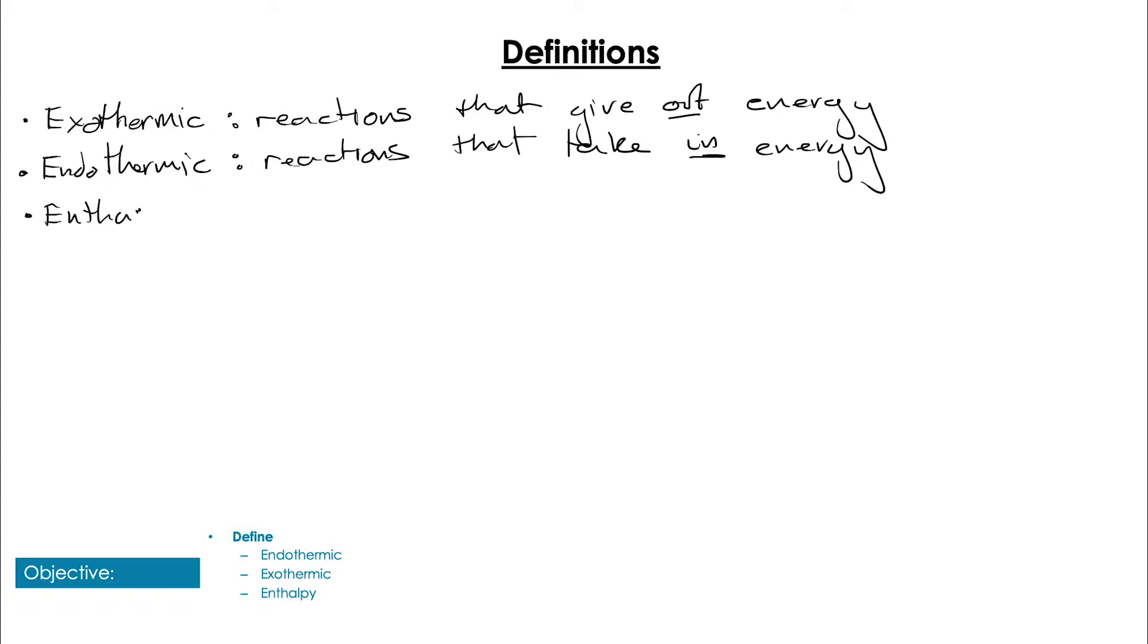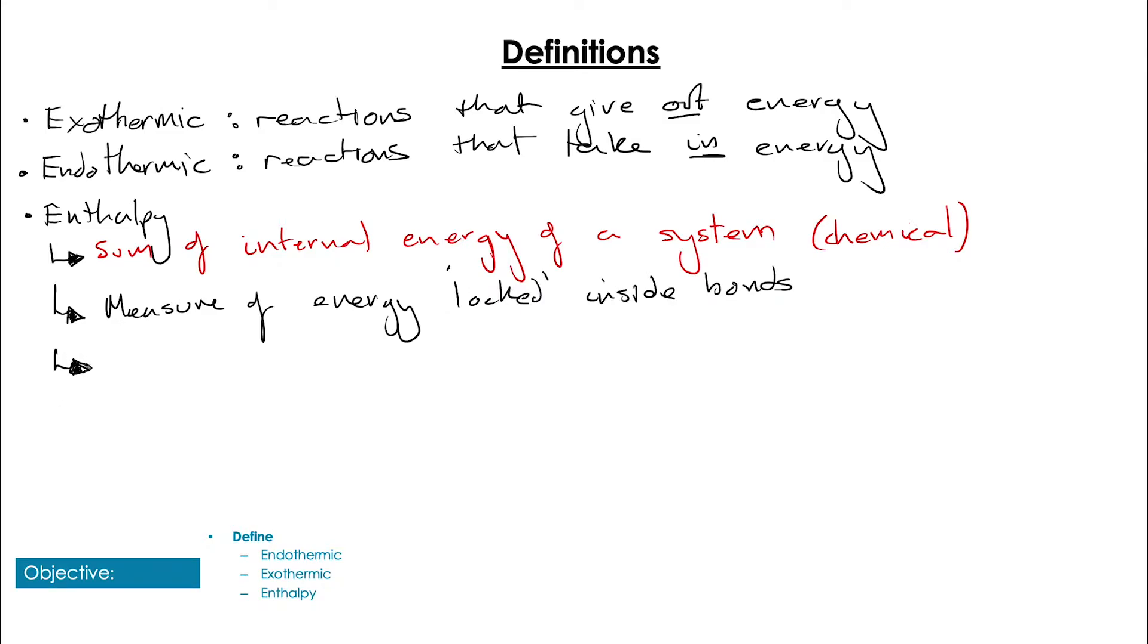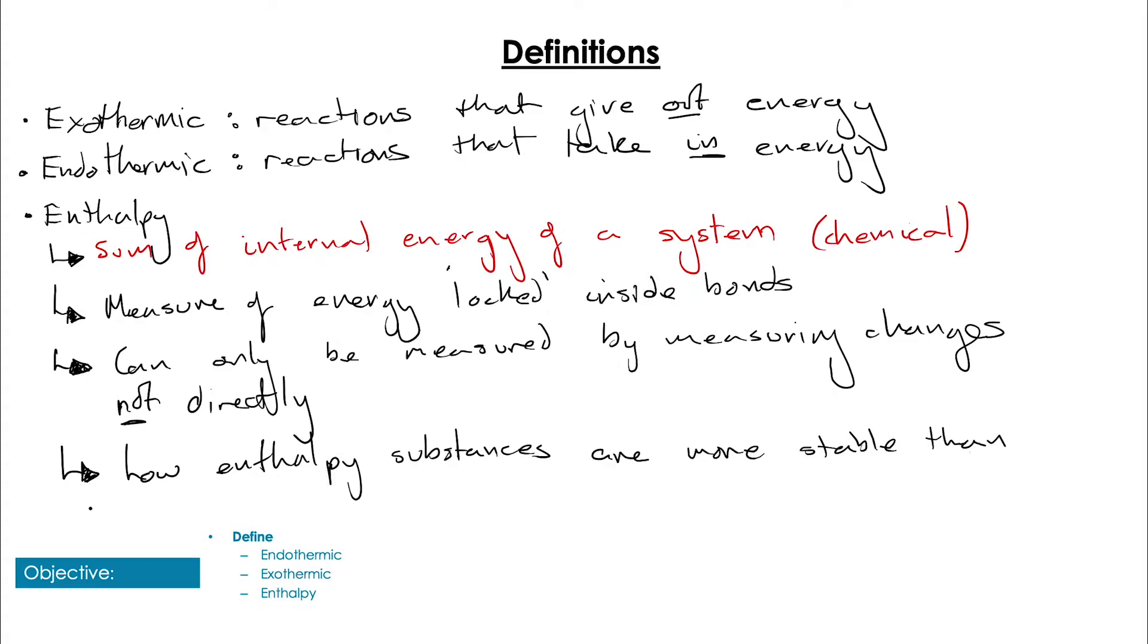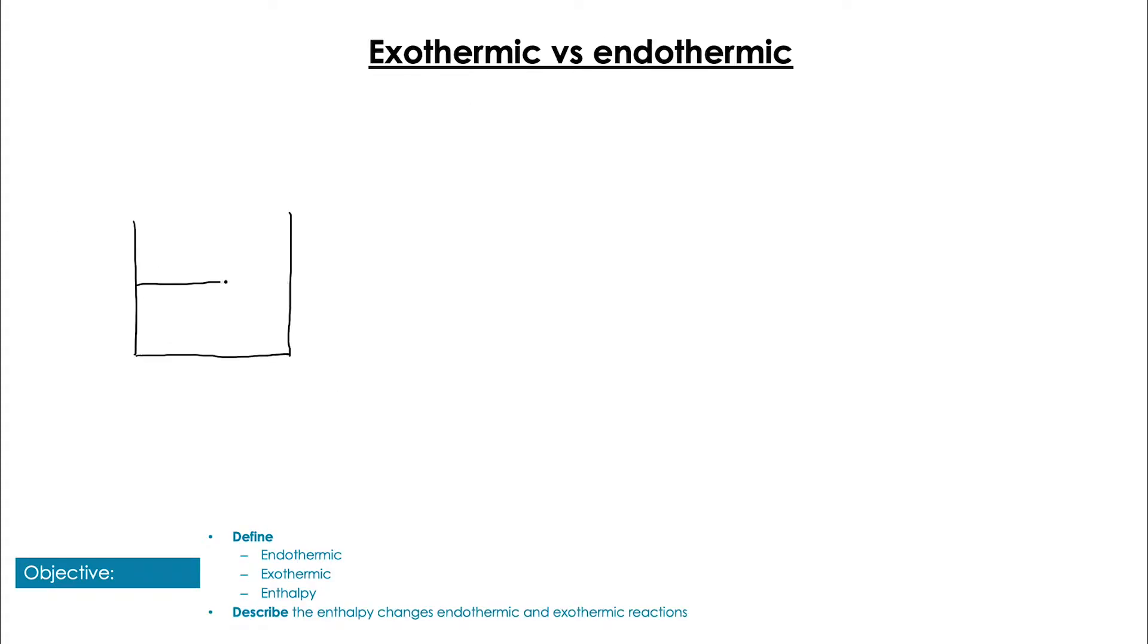The next term though is enthalpy. Now enthalpy is a term that helps us describe the sum of the internal energy of a given system, specifically chemical systems in our case. So we can consider enthalpy a measure of the energy that is locked inside chemical bonds. We can't directly measure this and we can only measure it by measuring energy changes, something we'll be looking at in more detail in the next video. Low enthalpy substances are considered to be more stable and high enthalpy substances are considered to be more unstable.